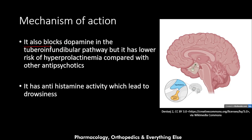Clozapine also blocks dopamine in the tuberoinfundibular pathway, which connects the hypothalamus with the pituitary and is responsible for balancing prolactin levels. However, clozapine has a lower risk of hyperprolactinemia compared to other antipsychotics, as it only minimally inhibits this pathway. Additionally, clozapine has antihistamine activity, which causes drowsiness in patients taking the medication.